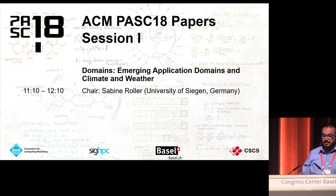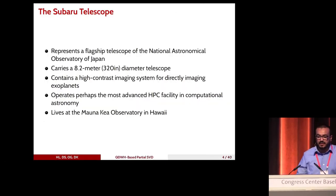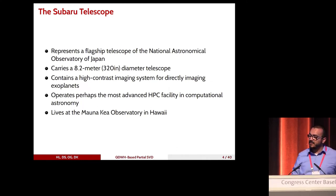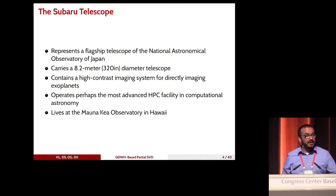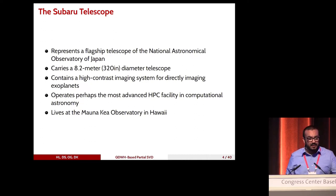The Subaru Telescope is one of the flagship telescopes of the National Astronomical Observatory of Japan. It carries an 8.2-meter diameter primary mirror — quite huge, perhaps one of the largest ground-based telescopes deployed today. It contains a high-contrast imaging system for directly imaging exoplanets — planets located outside of our solar system — and operates perhaps the most advanced small HPC facility for the computational astronomy discipline. It lives at the Mauna Kea Observatory in Hawaii.